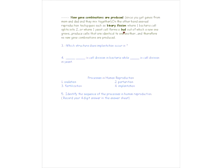We talked about these different processes in human reproduction. Let's see if we can put them in order. Which one do you think is first — ovulation, fertilization, parturition, or implantation? First ovulation happens: the egg is produced. Then fertilization: the egg is fertilized by the sperm. After that, the zygote is produced and then it's implanted into the endometrium. The last one is parturition, which is childbirth.